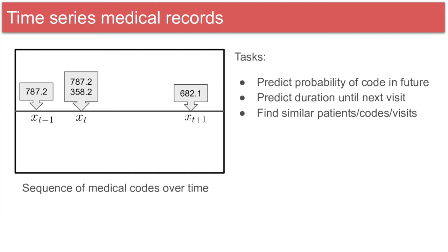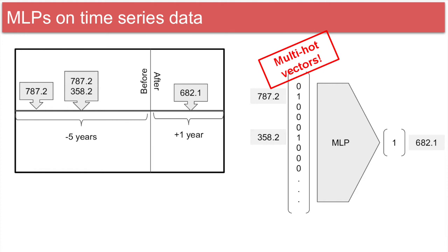We can use multi-hot vectors to encode each time point. One simple approach to make predictions in this setting is to group all events in a previous time period together, and then predict a future event in some fixed time period. This simplicity will allow us to generate many examples and avoid the model from becoming distracted from various artifacts that can exist in the data. To make a prediction, a simple multi-layer perceptron takes in a multi-hot vector specifying all the events and outputs a single probability. This is always the first thing to try before using a more fancy model.